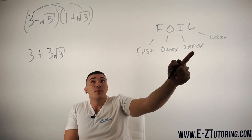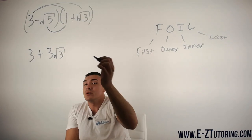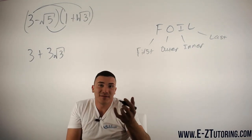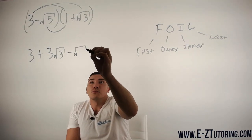Then we need to multiply the inner terms, negative root 5 and 1 which 1 times anything is just the same number as itself. So this is just minus root 5.